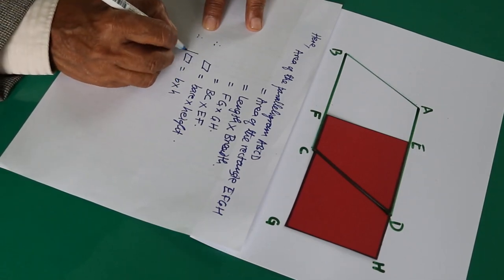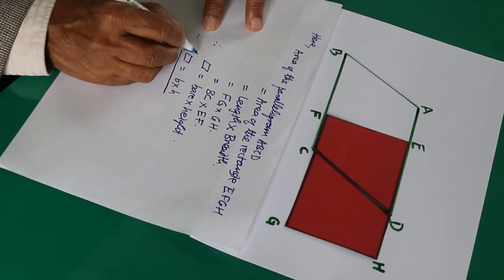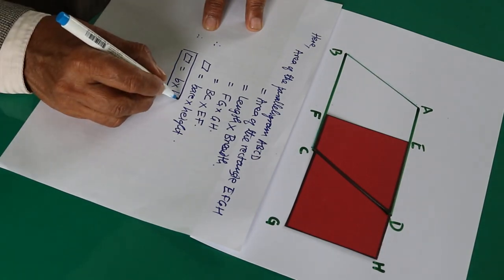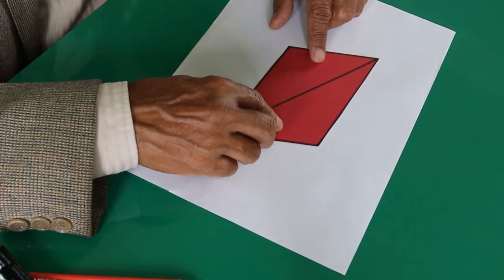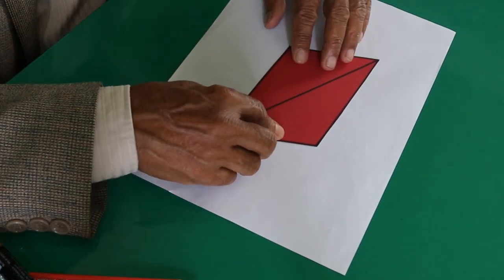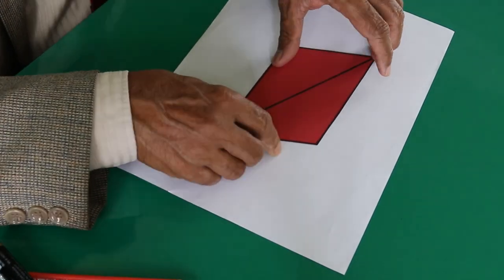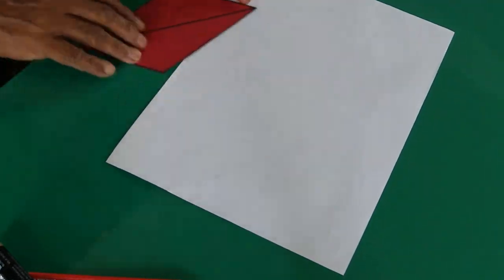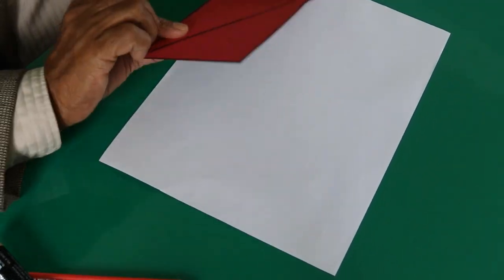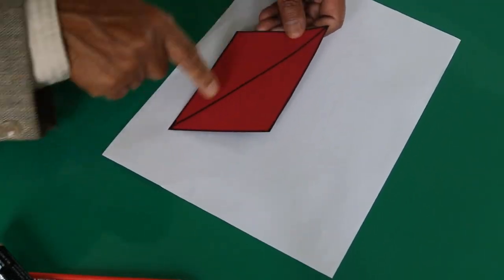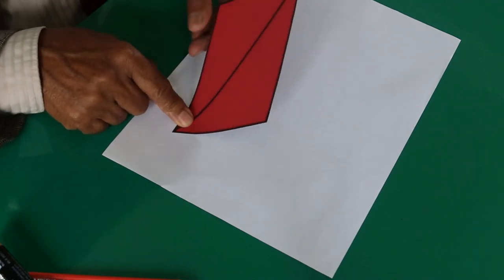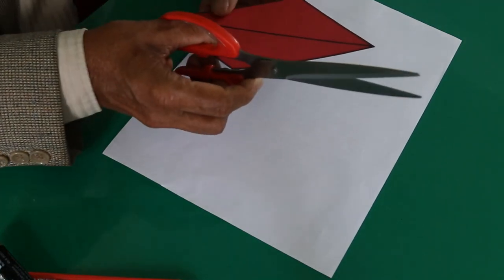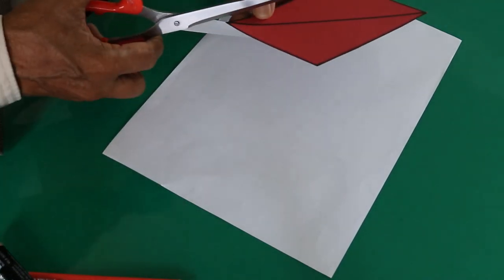So this is the formula generalized today. For the alternative approach, take the parallelogram sheet of paper with the diagonal in it and cut along the diagonal into two pieces.